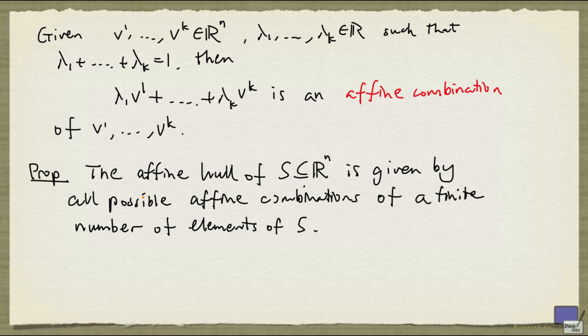In other words, to form the affine hull, you just take all possible finite subsets of vectors of S and form affine combinations of them. This result is easier to work with than forming the intersection of all possible affine subspaces containing S.